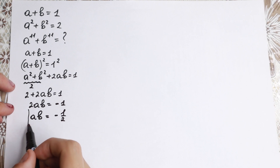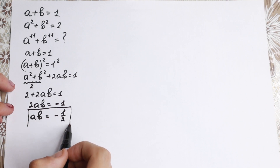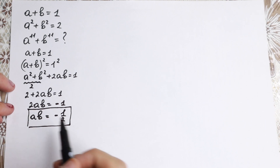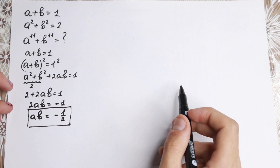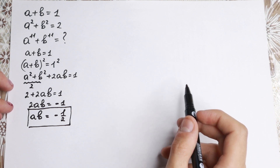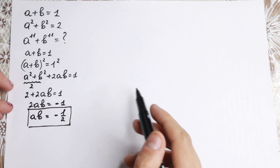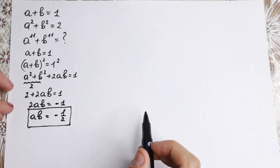Dividing both sides by 2, we have that ab equals minus one half. This is the first really important result for us. Now let's go further — we need to find a to the 11th power, and we need to work up to that power step by step.